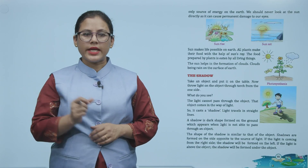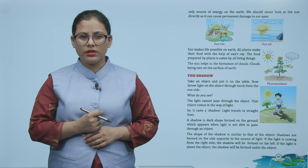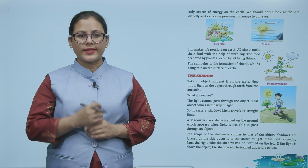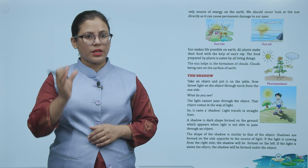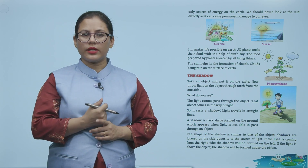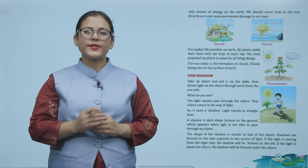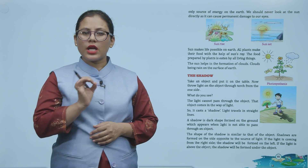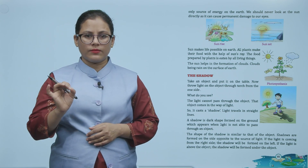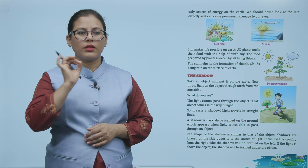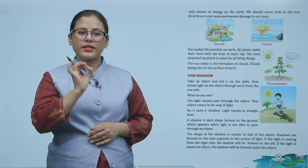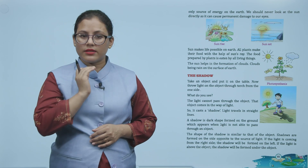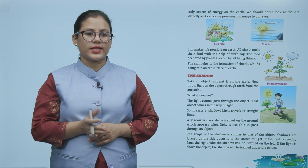The shadow. Take an object and put it on the table. Now throw light on the object through a torch from one side. Light cannot pass through the object. That object comes in the way of light so it casts a shadow. Wo object light pass nahi kar paayega, islie wo ek shadow cast karega.